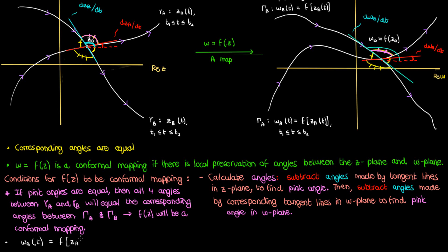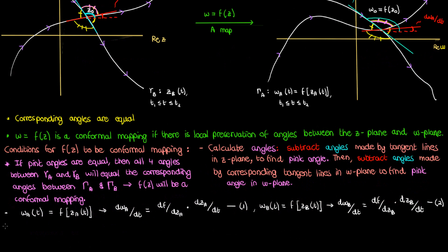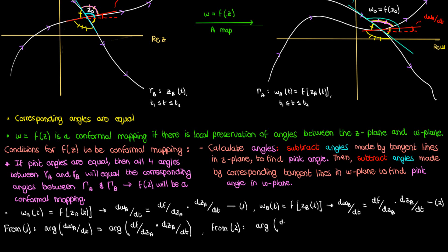Let's begin by writing the derivative of w_a with respect to t using the w_a equation. I'll call this equation 1 — just note that when I made equation 1, I used the simple chain rule. We'll also use the w_b equation to write the derivative of w_b with respect to t, and again we're going to apply the chain rule. I'll call this equation 2. From equation 1, if the derivative of w_a with respect to t equals the derivative of f with respect to z_a times the derivative of z_a with respect to t, then the arguments of these left-hand and right-hand sides are also equal. Essentially, we can take the argument of both sides of equation 1 to get this argument equation. And right next to this argument equation, I'll write the corresponding argument equation for equation 2 using w_b and z_b.